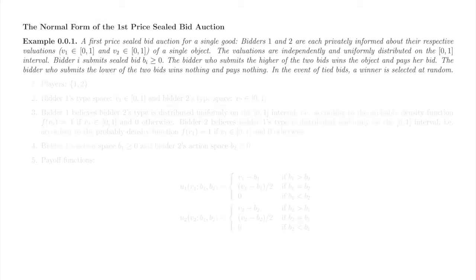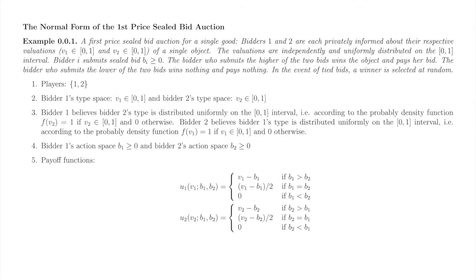Our first example is a first-price sealed bid auction for a single good. Bidders observe the object, each learns how much she thinks it is worth, and then the bidder submits sealed bids. The player with the higher bid wins the object and pays her bid. The other bidder wins nothing and pays nothing. Ties are broken at random. The players are the two bidders. The seller makes no decisions in this game, so the seller is not a player. A player's type is her valuation.